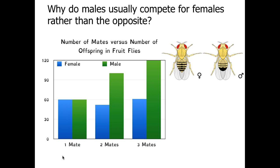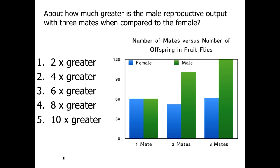With males, the larger the number of mates, the more offspring they have, because each female with which they have sexual contact creates an entire new set of offspring. They're not slowed down by needing to invest in developing or laying the eggs. Pause the video to answer the question about the differences in reproductive output. Males have a two times greater offspring output — 120 to 60 — when they have three mates.